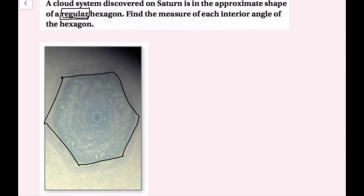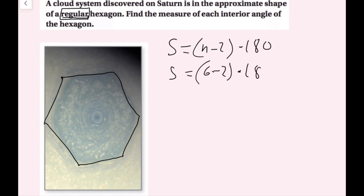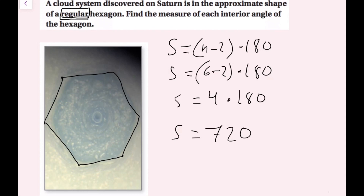Using the formula: s equals (n minus 2) times 180, with 6 sides and 6 angles, that's (6 minus 2) times 180, which is 4 times 180, giving us 720. You could also use the triangle method — picking a vertex and drawing triangles, you get 4 triangles, each with 180 degrees, giving 180 times 4 equals 720.